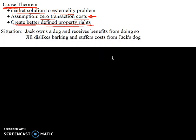To get an idea of how this works, let's look at the following situation. Imagine some guy and some girl — Jack and Jill — who live next to each other in an apartment building. Jack owns a dog and he enjoys it; he takes him for walks, throws a ball, gets happiness from the dog. But Jill dislikes the dog because the dog barks all the time and keeps her up at night. So we have a negative externality problem.